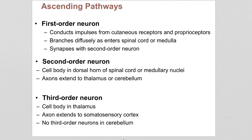Ascending pathways: the term ascending tells you that information is going up to the brain, and you can remember that this always means sensory, because you don't send motor information up to the brain — that wouldn't make sense. So the sensory information is always going up. A motor pathway would be descending — going down the spinal cord, taking that information out to a muscle or gland somewhere.